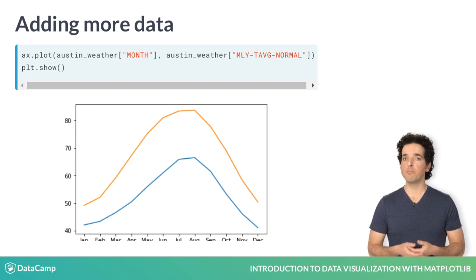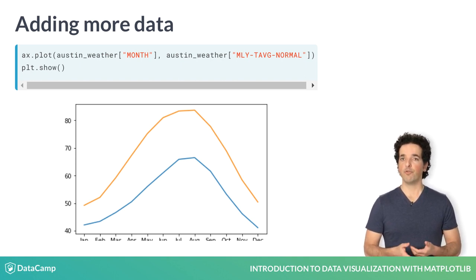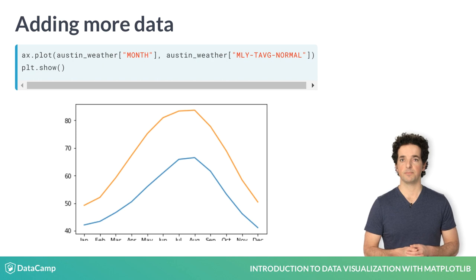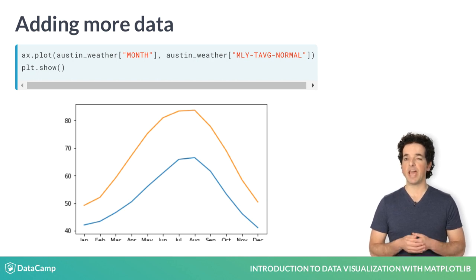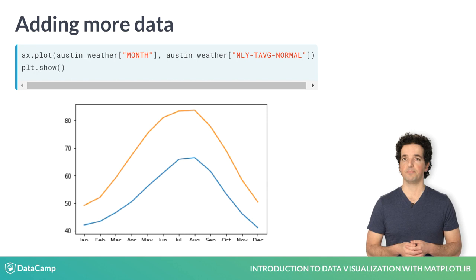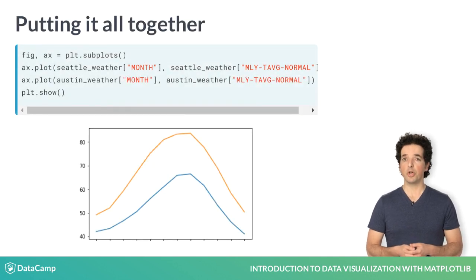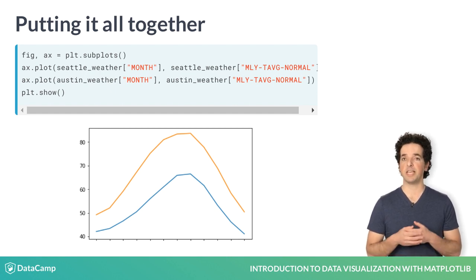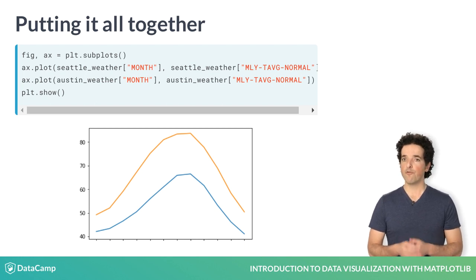If you want, you can add more data to the plot. For example, we also have a table that stores data about the average temperatures in the city of Austin, Texas. We add these data to the axes by calling the plot method again. Here is what all of the code to create this figure would look like: first, we create the figure and the axes objects; we call the axes method plot to add first the Seattle temperatures, and then the Austin temperatures to the axes; finally, we ask Matplotlib to show us the figure.